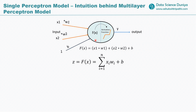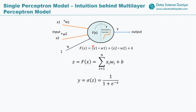In a single perceptron, we have one neuron that accepts different inputs — here we have two inputs x1 and x2. Inside this neuron we have a function f(x), which is the weighted sum of these inputs along with weights and a bias: f(x) = x1*w1 + x2*w2 + b. On top of this we apply an activation function.